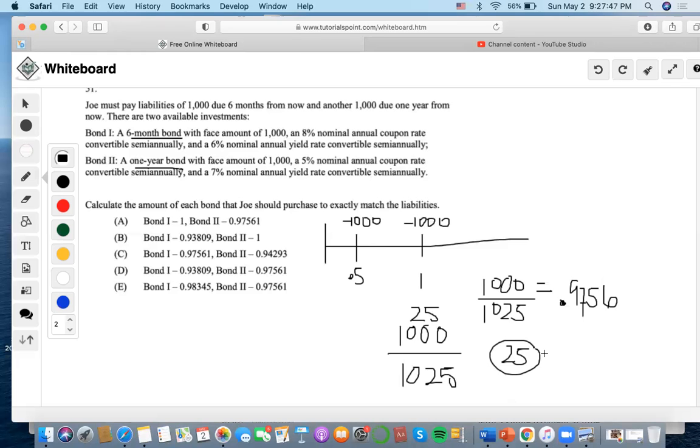we multiply $25 times 0.9756, which gives us $24.39. We'll use this amount to finance the six-month liability. That will be $1,000 minus $24.39, leaving $975.61.